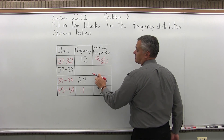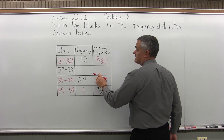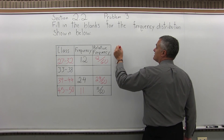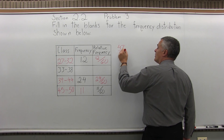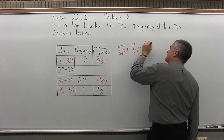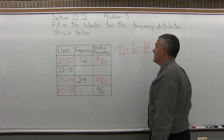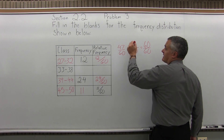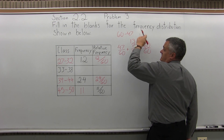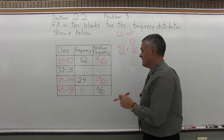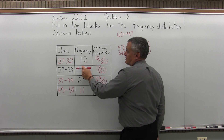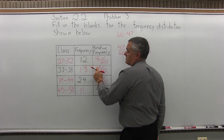Let's see what I have so far: 12 over 60 plus 24 over 60 is 36 over 60. Then 36 plus 11 is 47 over 60. So 47 over 60 plus some unknown amount over 60 must add up to 60 over 60, which reduces to 1. The missing amount is 13 — 60 minus 47 equals 13. So my missing relative frequency is 13 over 60, which means the missing frequency is 13, the numerator of the fraction.